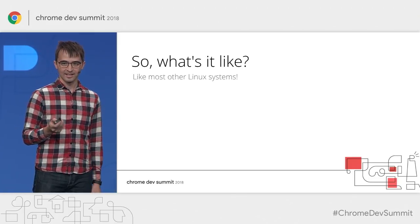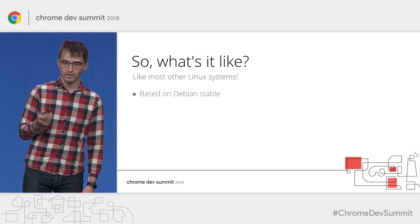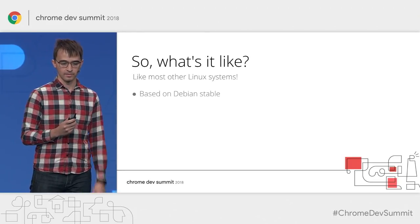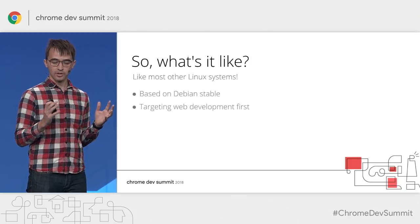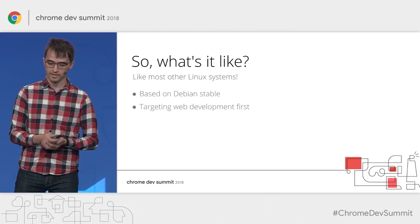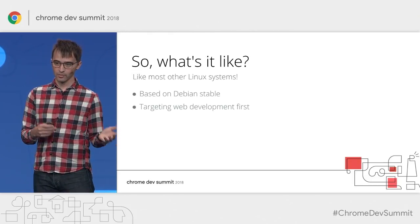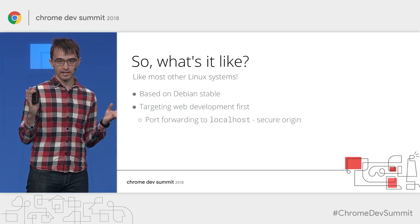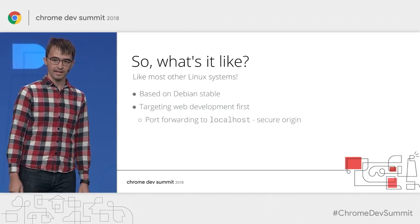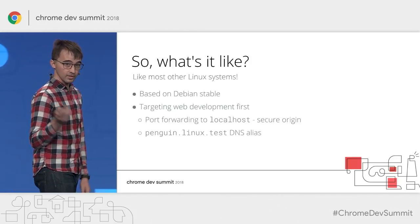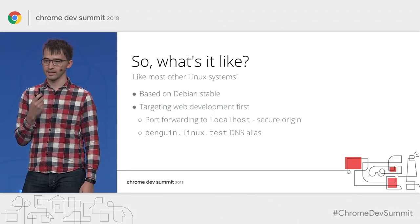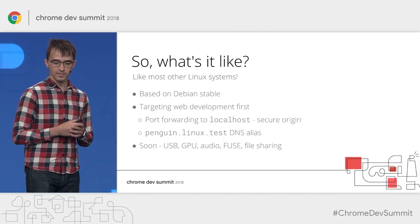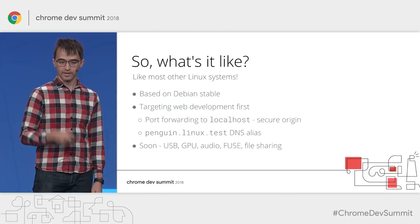How does it actually feel? It should feel like most other Linux systems. Crostini is based on Debian Stable, because many developers are familiar with apt package management and Debian-based systems. We're starting out targeting web developers since Chrome OS is a web-based OS — you should be able to develop web apps on it. We provide port forwarding so it doesn't feel like you're running a container; you get localhost to connect to, treated as a secure origin. We also provide a penguin.linux.test DNS alias. We'll be adding USB, GPU, audio support, file systems, and better file sharing in upcoming releases.